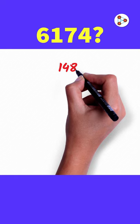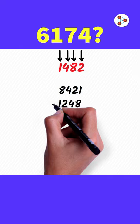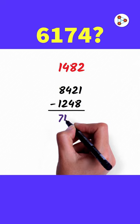Form the largest and the smallest numbers using these digits and subtract the smallest one from the largest one. This subtraction gives us 7173.